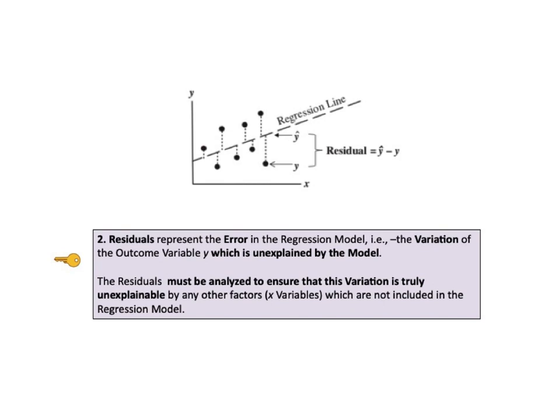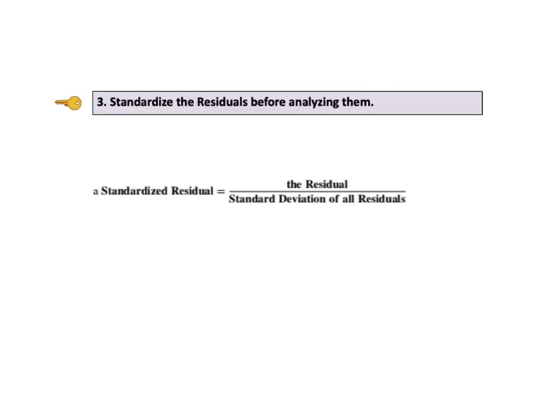KTU number 2 goes on to say that the residuals must be analyzed to ensure that this variation is truly unexplainable by any other factors, that is, X variables as factors, which are not included in the regression model. KTU number 4 will give us six specific things to analyze. But first, KTU number 3 says, standardize the residuals before analyzing them.